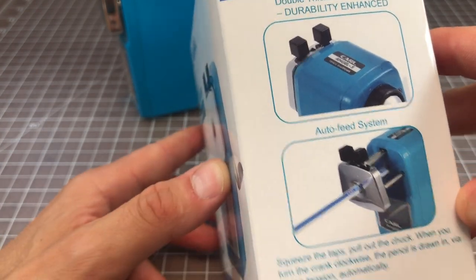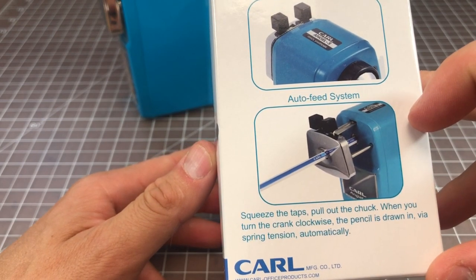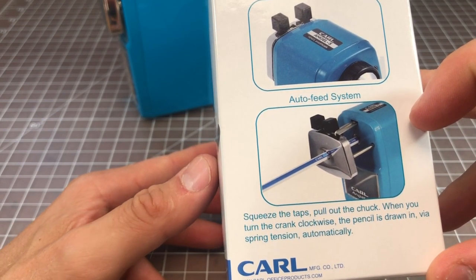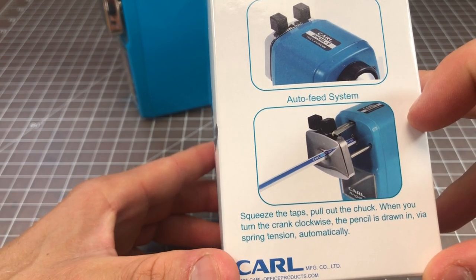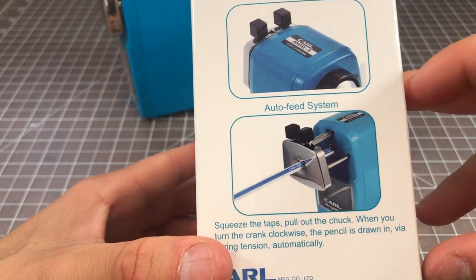It's a steel body which is nice to see. It has a spring-loaded front plate that kind of forces the pencil in, which is important. It's called an auto feed.